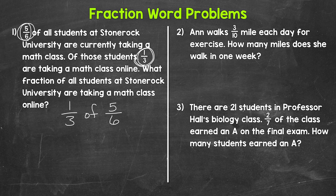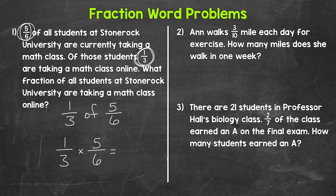Whenever we are finding the fraction of something, we can multiply in order to find that answer. So we can replace 'of' with a multiplication sign. So one-third times five-sixths will give us our answer — one-third of the students taking math classes are taking those classes online, and we're multiplying to find that answer.